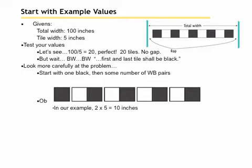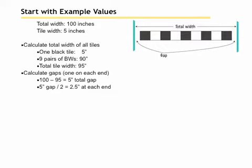In our example, a white-black pair is 10 inches wide. So given our total length of 100 inches and we have a tile width of 5 inches, so if we calculate the width of all tiles, the first one black tile equals 5 inches and we add that to 9 pairs of black-white tiles, that equals 90 inches, for a total width of 95 inches. So our gap at each end, you can see 100 minus 95 is going to be a 5 inch gap, and then we're going to distribute it evenly at each end, so it's divided by 2, it's 2 1⁄2 inches at each end.